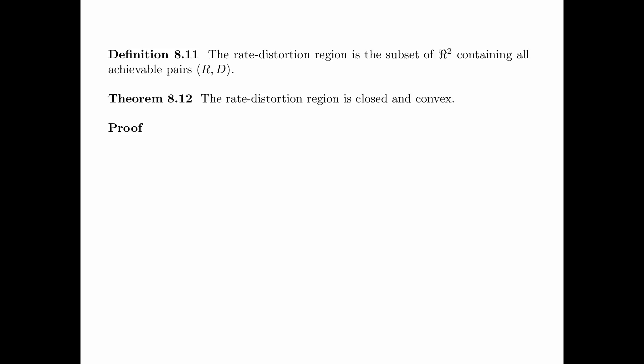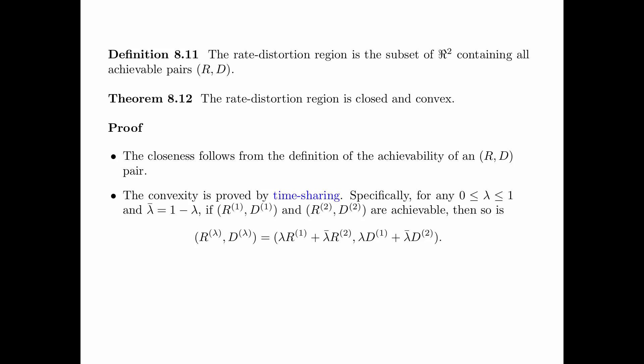Theorem 8.12 gives a basic property of the rate-distortion region. It says that the rate-distortion region is closed and convex. The proof is very simple. First, the closedness follows from the definition of the achievability of an (R, D) pair. Second, the convexity is proved by a technique called time sharing.